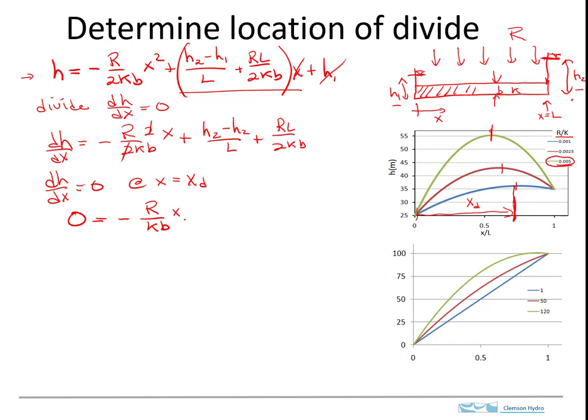So I get zero equals minus R over KB times X sub D times X sub D, and then plus this other stuff. Now I just want to solve for XD, so that's going to come over here, and then I'm going to multiply through by KB over R.